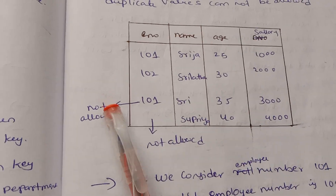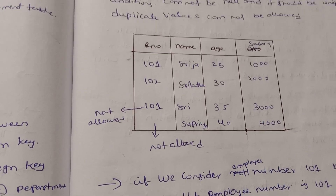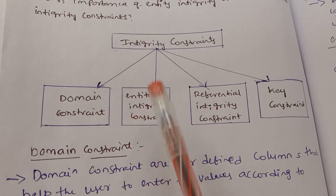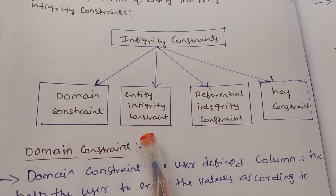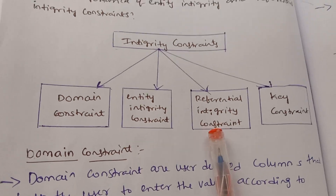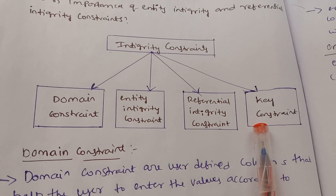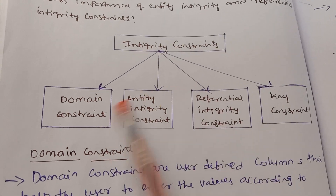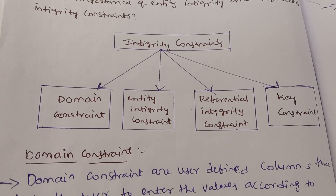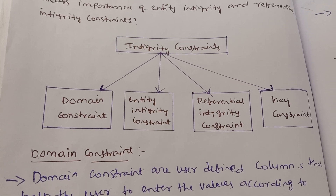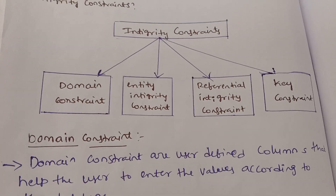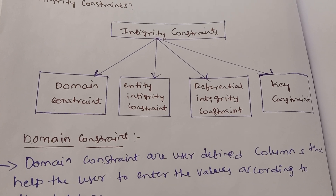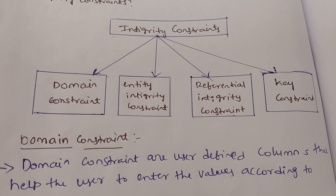So, in summary, we have four types of integrity constraints: domain constraint, entity integrity constraint, referential integrity constraint, and key constraint. If you have any questions, you can check the description or follow us on our Instagram channel.